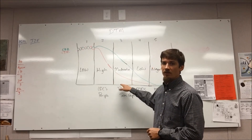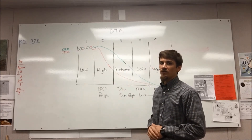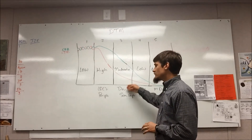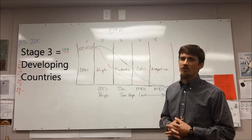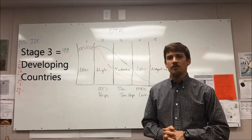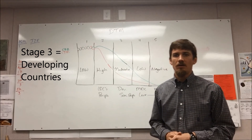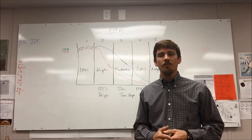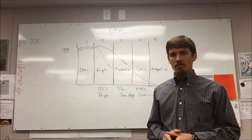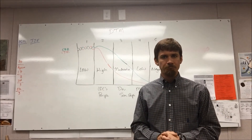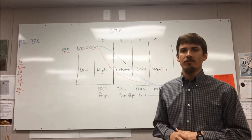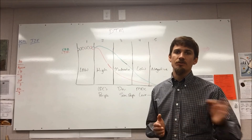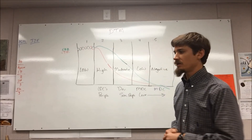Death rates are continuing to decline in stage three, but the most significant shift is the declining birth rates. Stage three countries tend to be our developing countries — those in the middle of development, or semi-periphery countries. One caveat: the United States, even as one of the most developed countries, is still considered stage three because of its moderately growing population, primarily due to a large influx of immigrants and the subsequent children they have after moving to the United States.